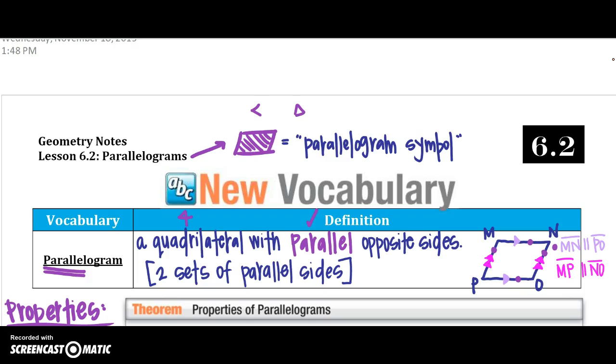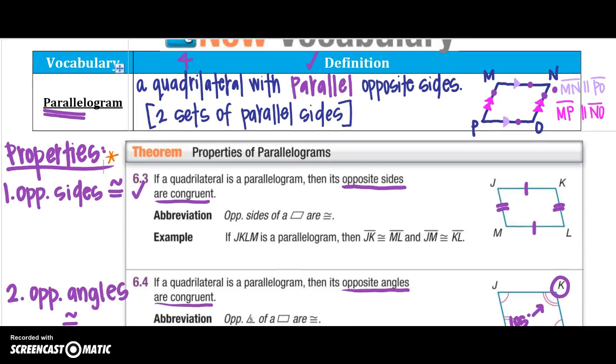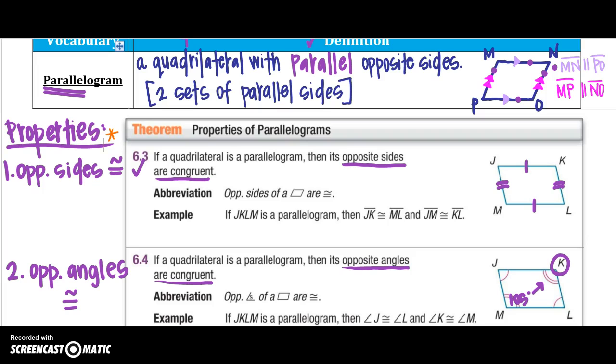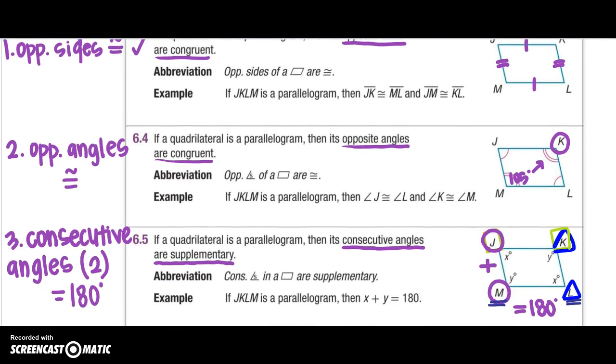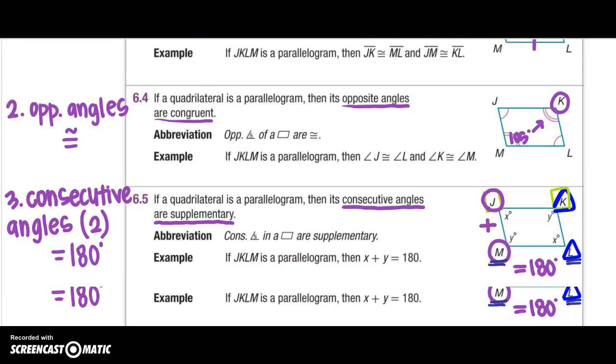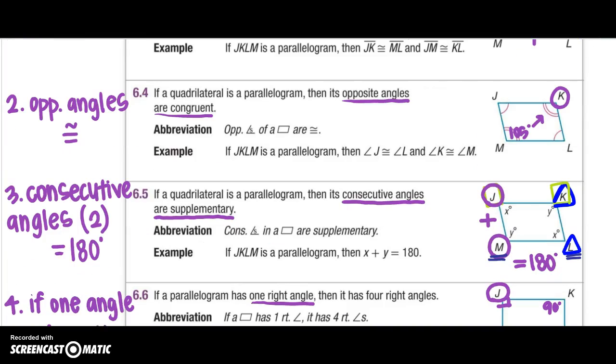So remember the parallelogram definition tells us that it has 2 sets of parallel sides. The first property we learned is that the opposite sides were congruent. The second property was that opposite angles are congruent. The third property was that consecutive angles are supplementary. The fourth one, if one angle equals 90, then all of them have to equal 90.